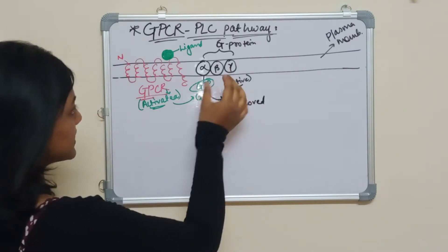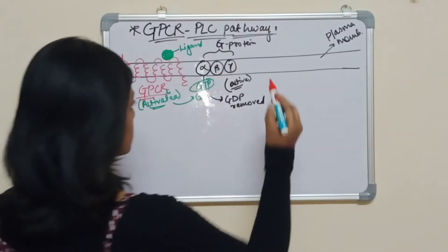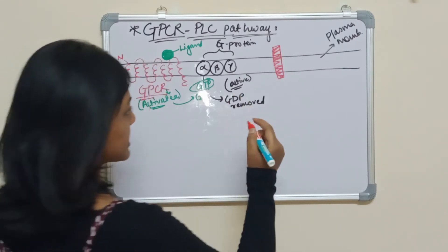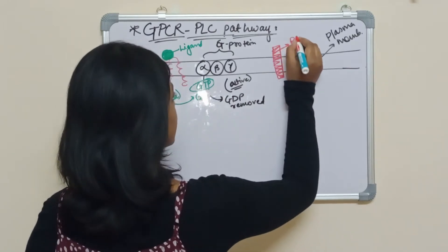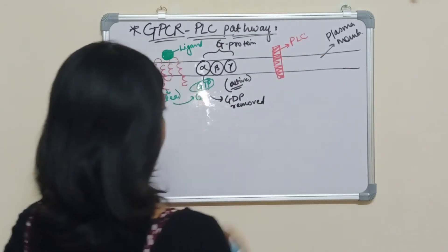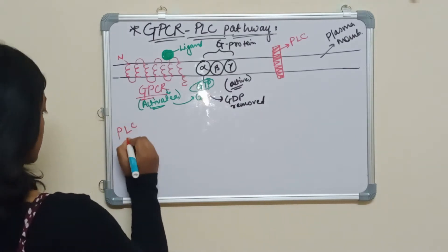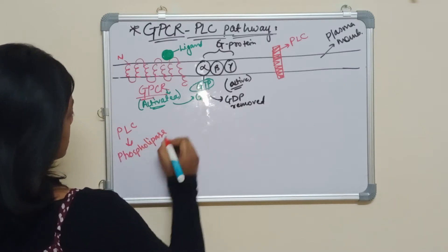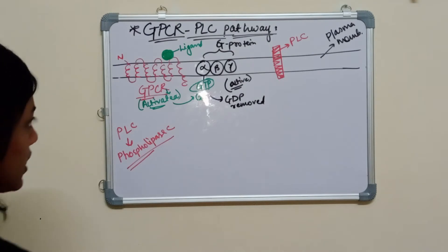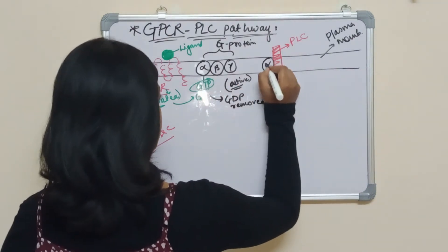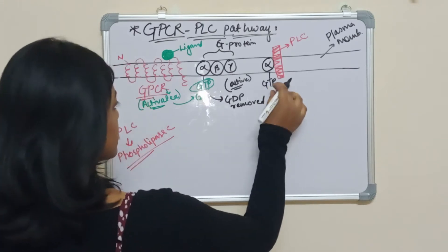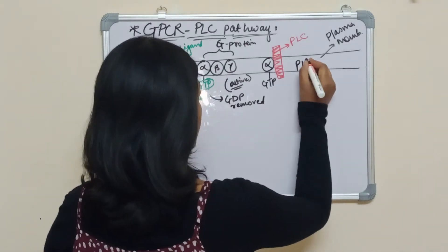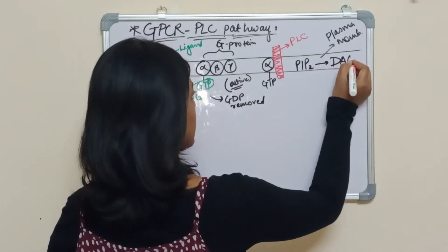While the G protein is active, there is another element present on the plasma membrane — that is PLC, which stands for phospholipase C. The alpha-GTP comes and binds to PLC, and once PLC is activated, it will break PIP2 into DAG and IP3.